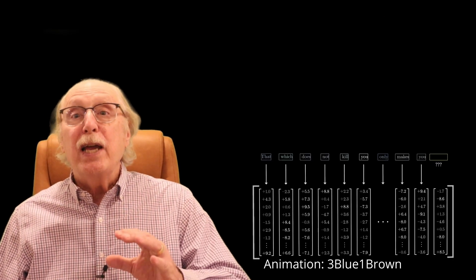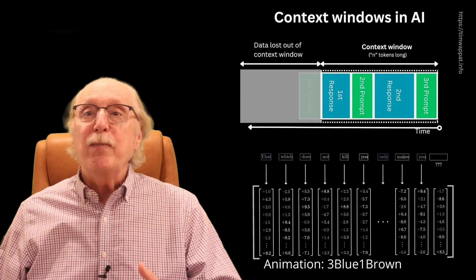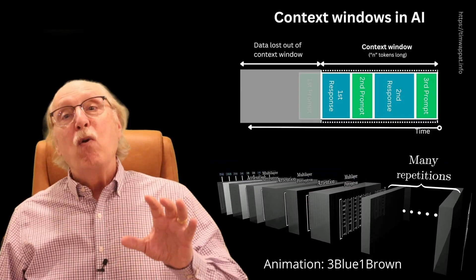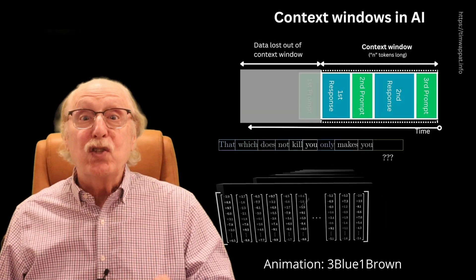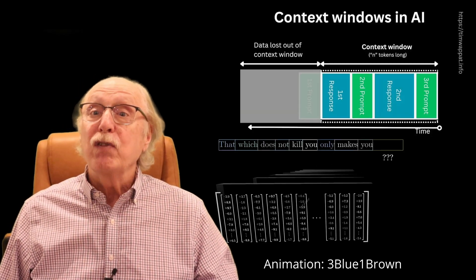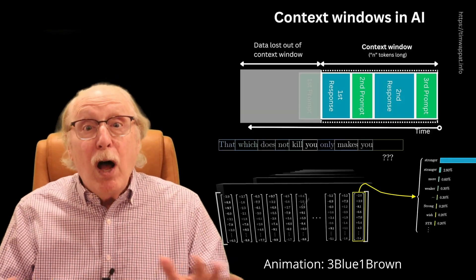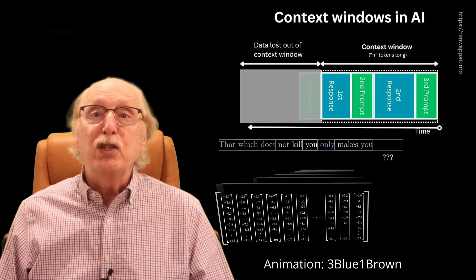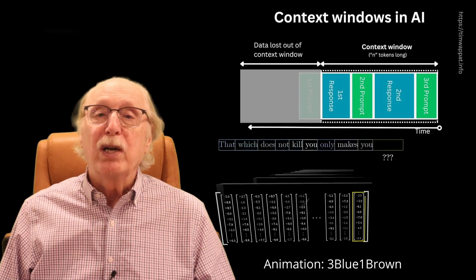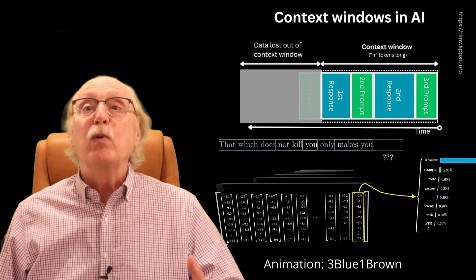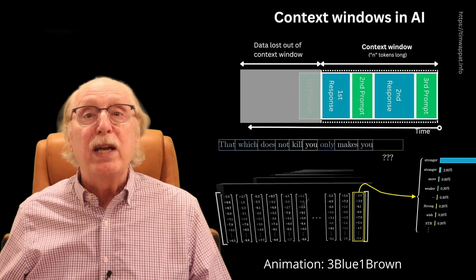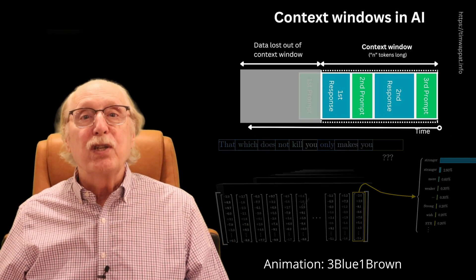ChatGPT emulates this idea with a context window, which can be many thousands of words. But unfortunately, once new facts exceed the size of the context window, they're gone. They are never included in the underlying knowledge base of the large language model, which is only changed when the model is completely retrained as it goes from one version to the next.